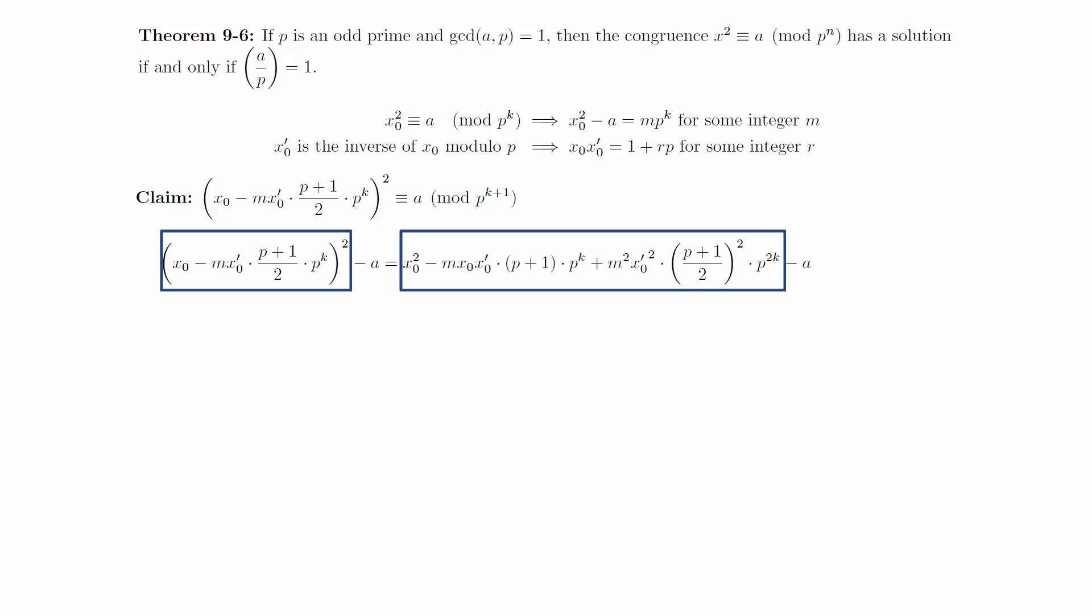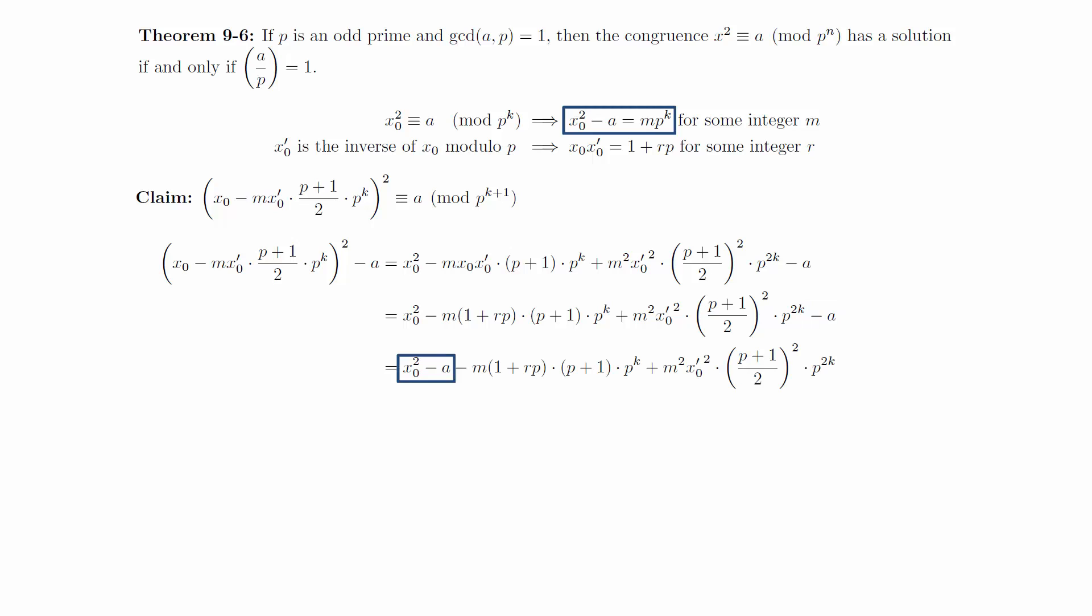We start off by squaring the first term. Using the relationship above, we can substitute for x0 times x0'. We can also rearrange the minus a term and put it next to the x0 squared term to allow us to use the inductive hypothesis and make another substitution.